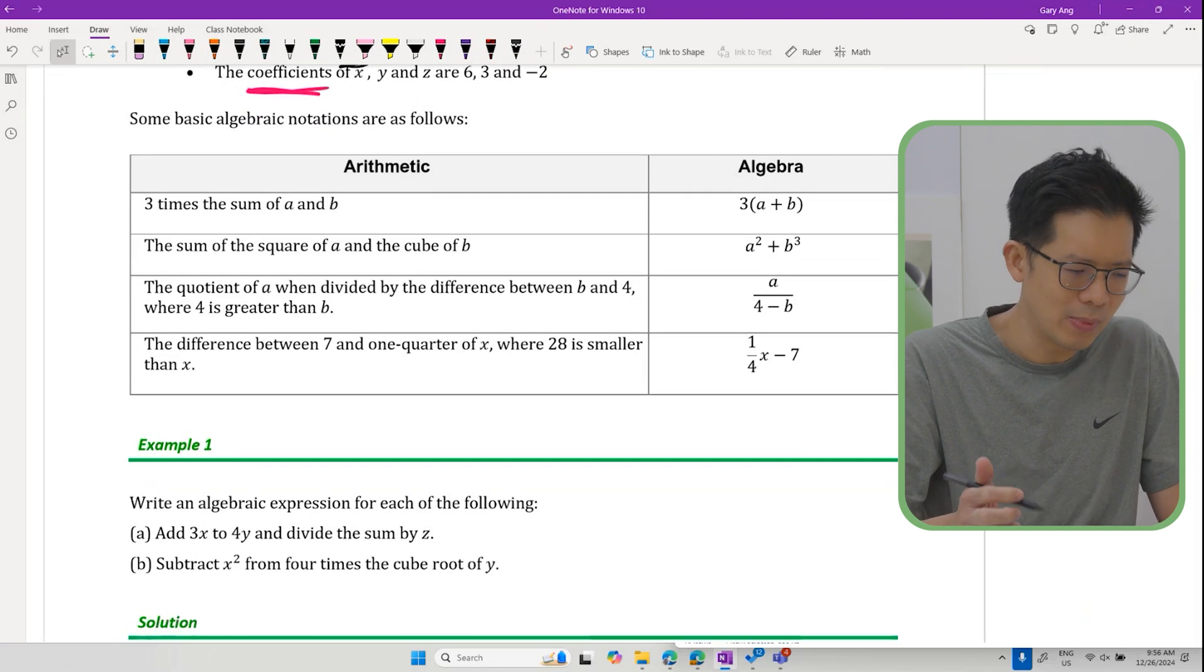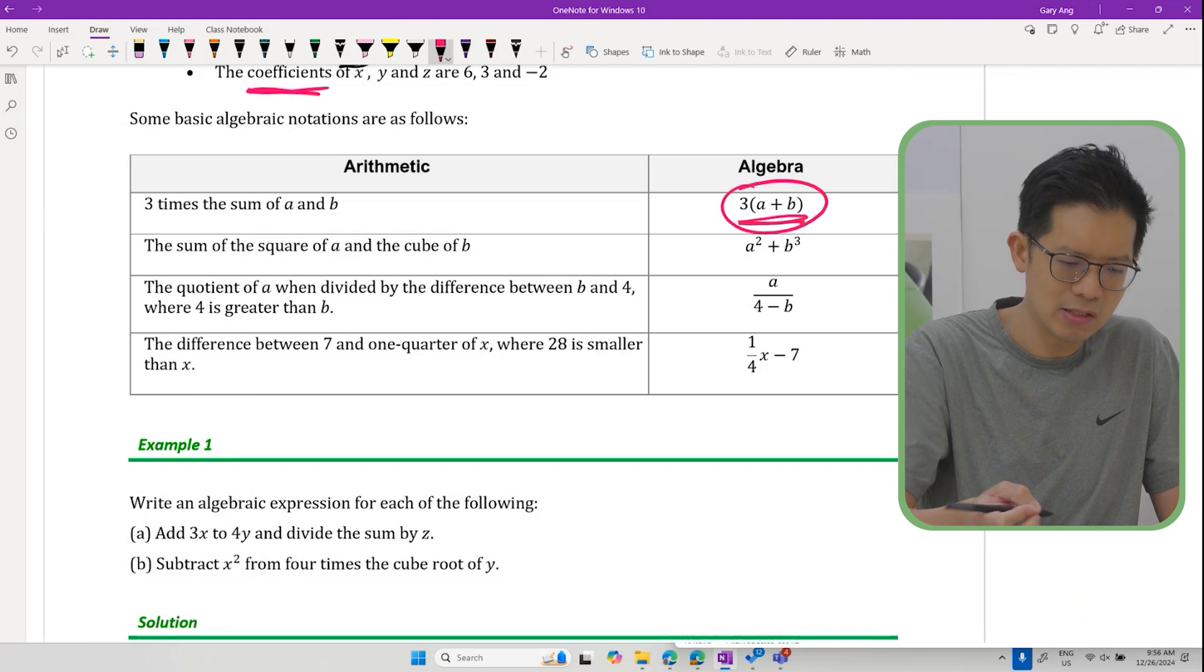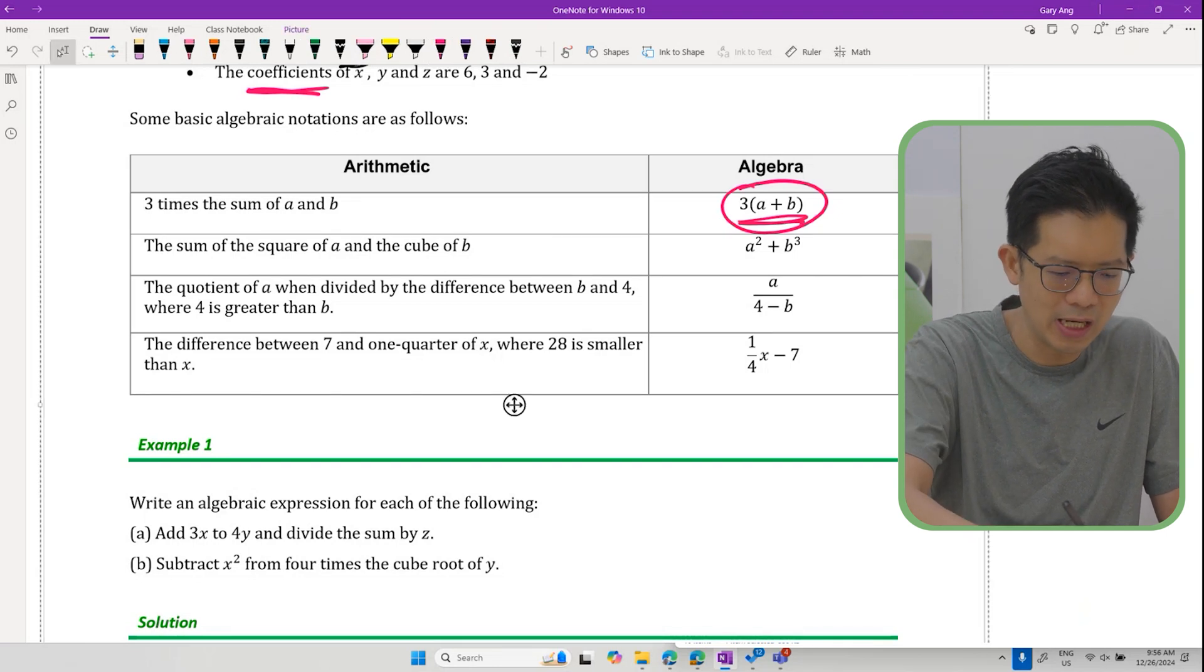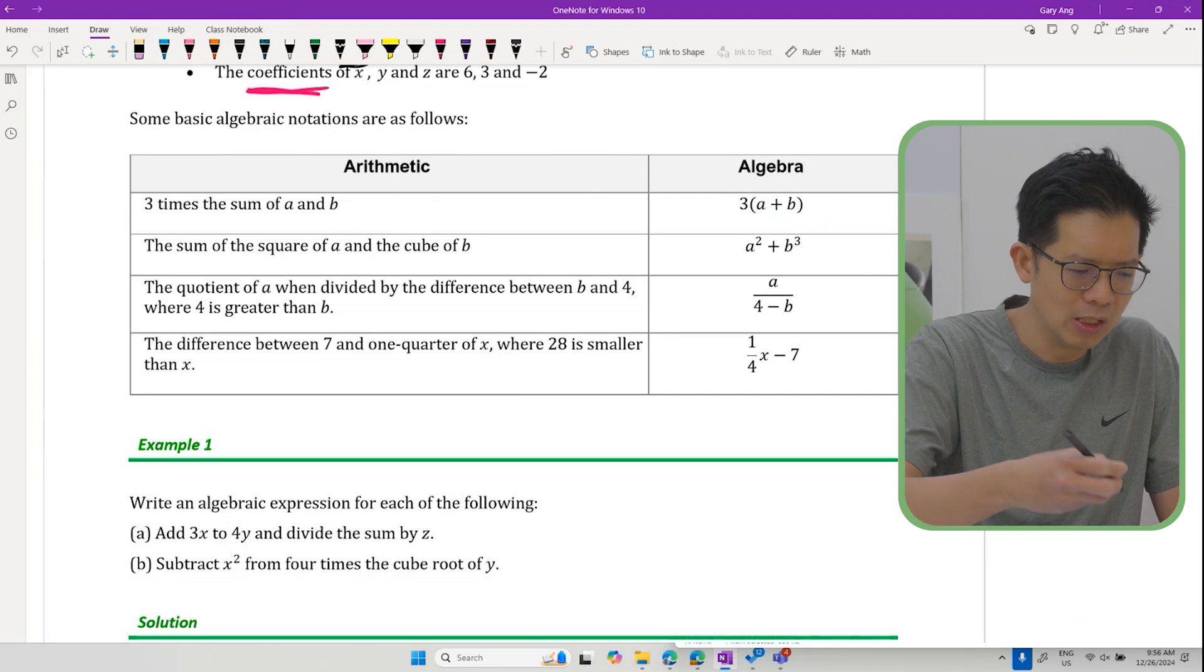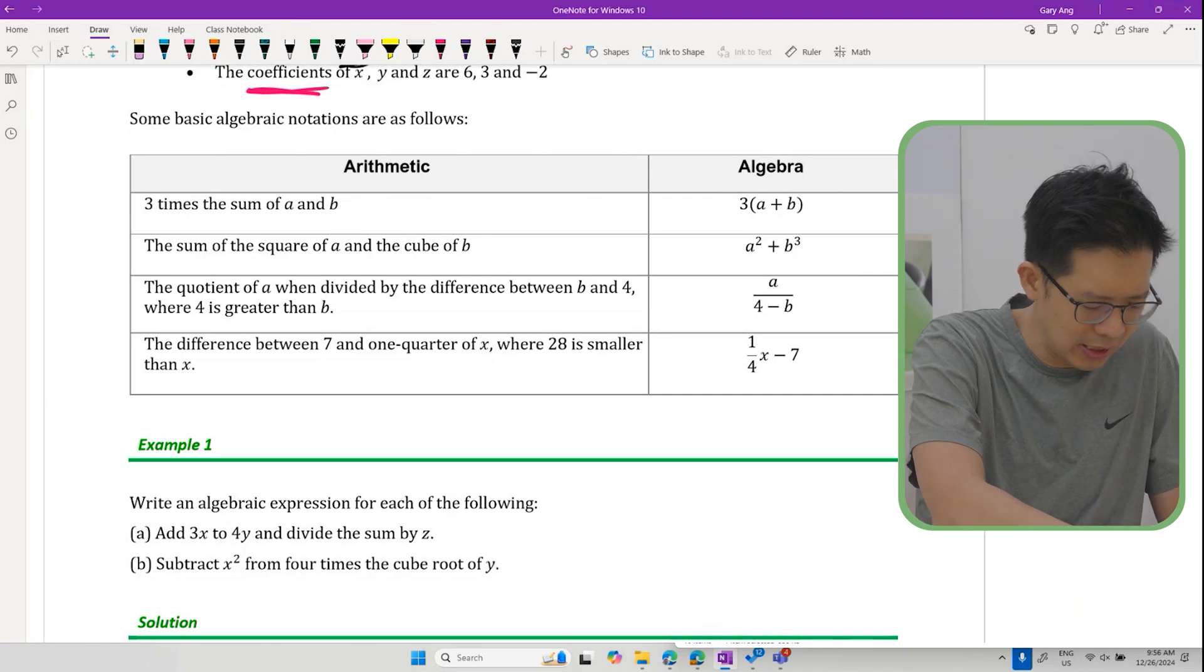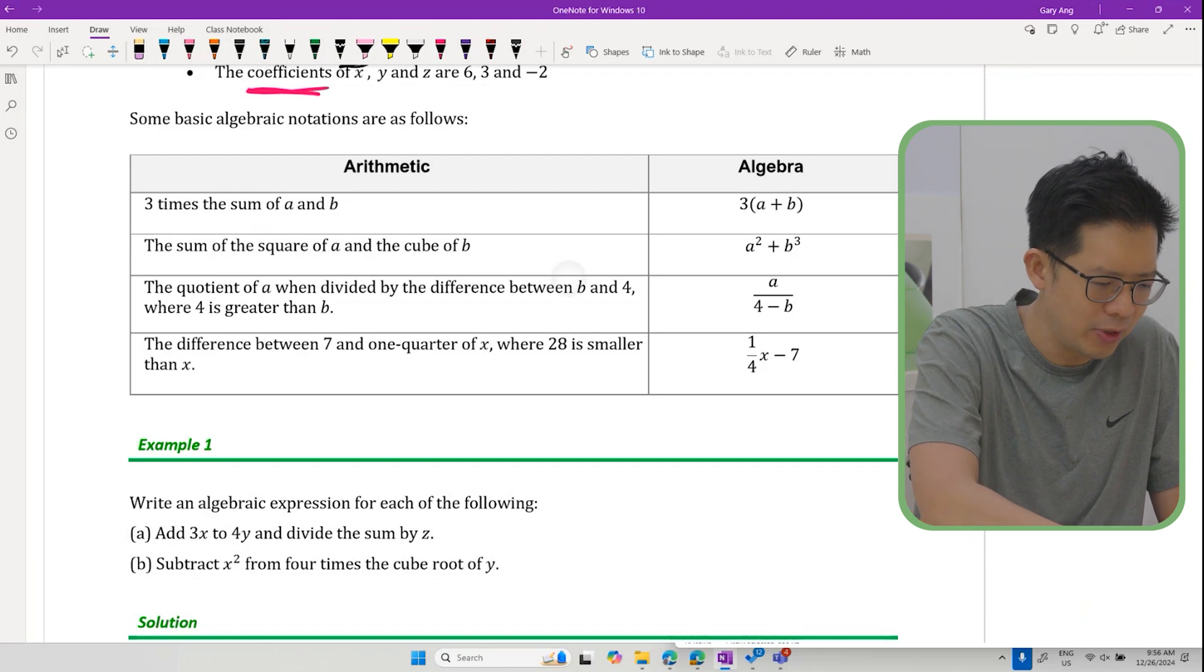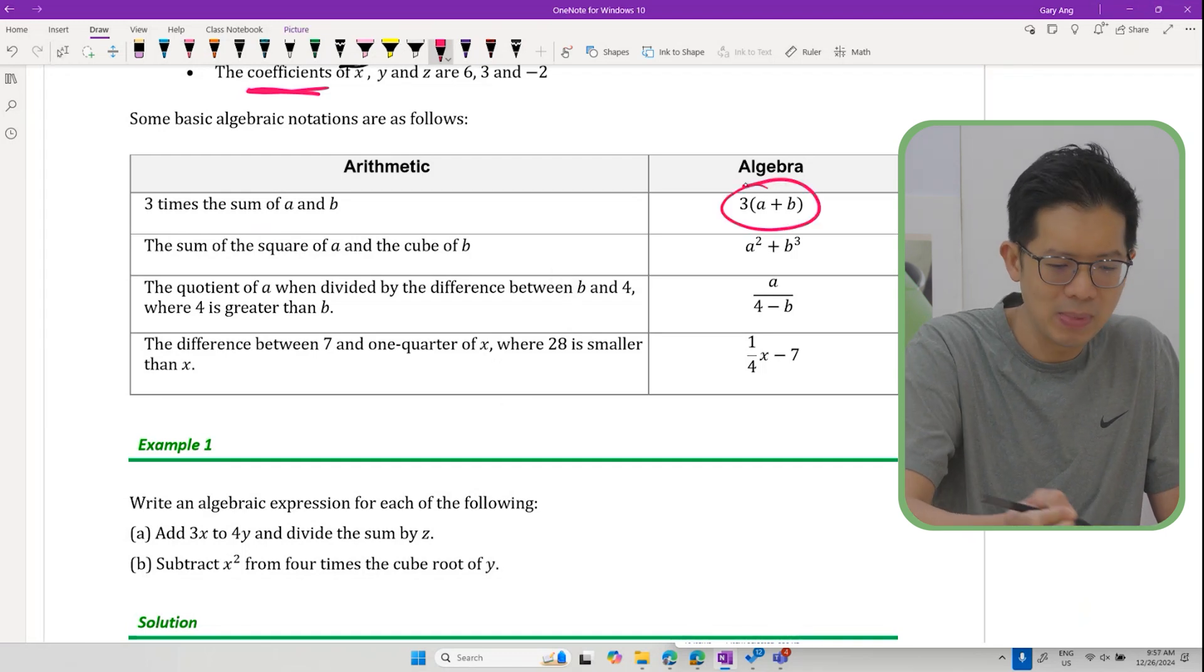This means something. In algebra, this does mean it's three times A plus B. At the same time we must be able to understand the English equivalent. For example, the English equivalent would be three times the sum of A and B.